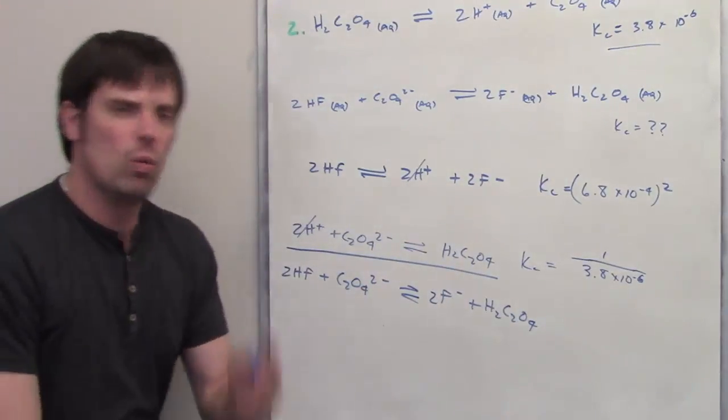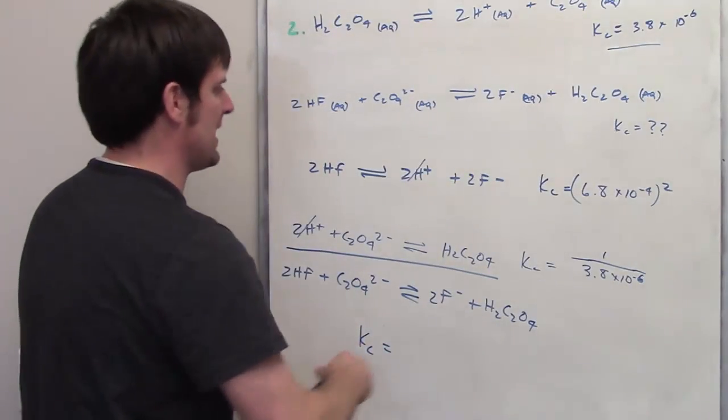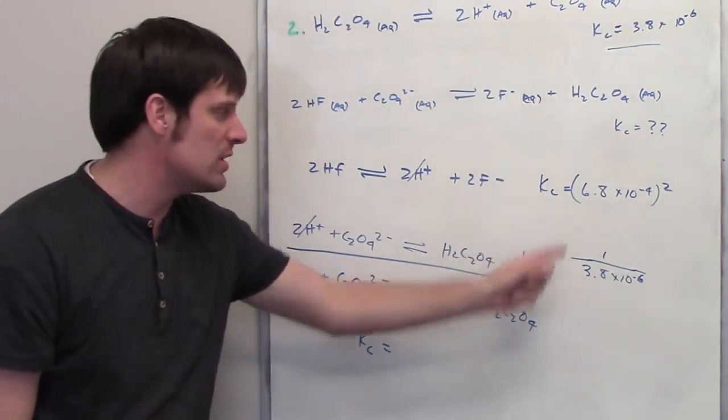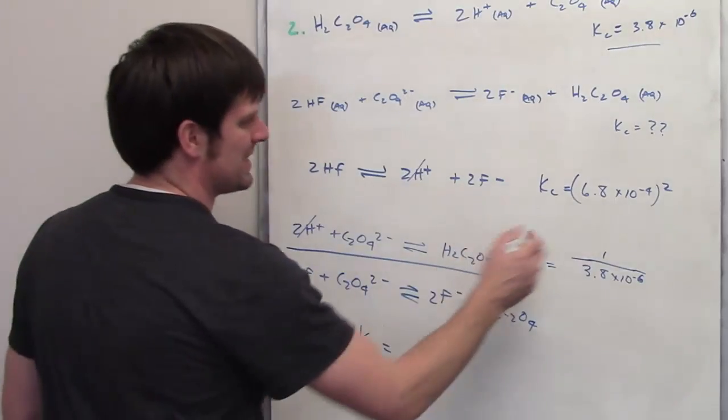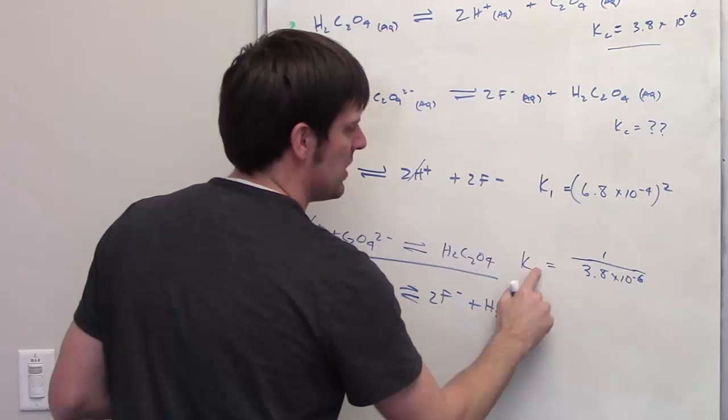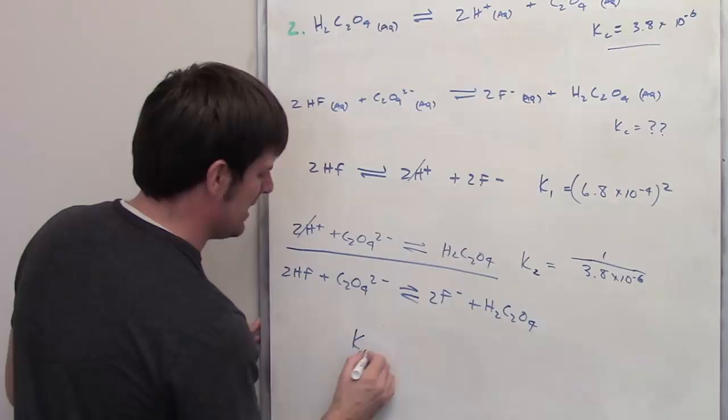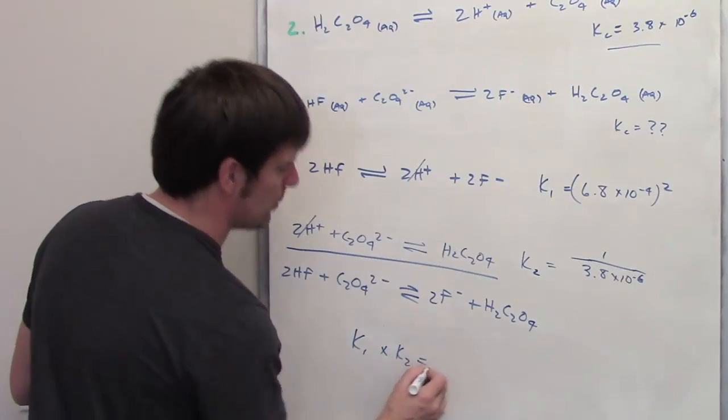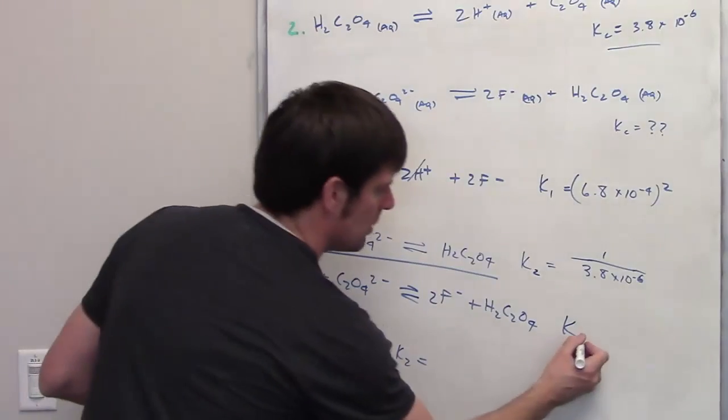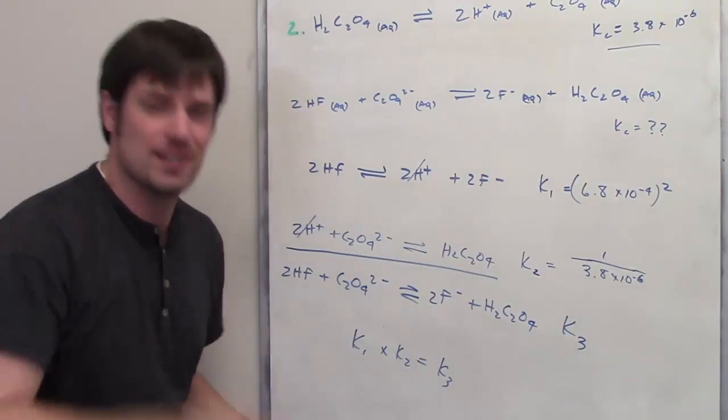Now, what does the new Kc end up becoming though? Well, when I take two different chemical equations and add them up, I have to multiply their individual Kcs. So what I'm going to do is I'm going to take this Kc value, I'll go ahead and call it K1, and this Kc value, which I'll call K2, if I take K1 and multiply it by K2, that will equal my overall equilibrium constant for this equation, which I will call K3. I'll let you do that on your own.